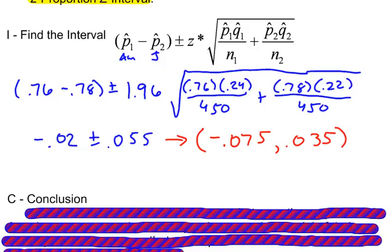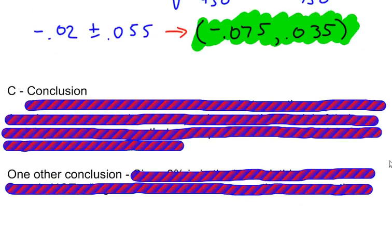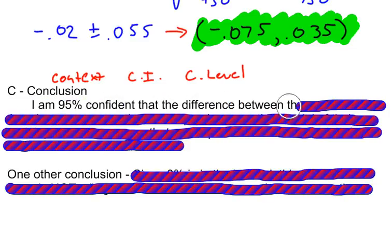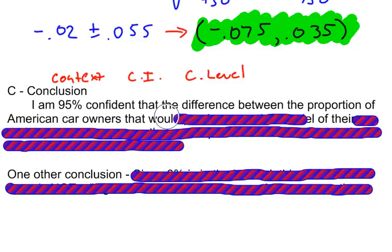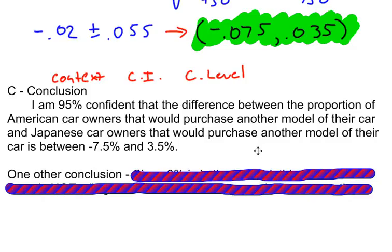This is my interval, and now I need to draw my conclusion. C stands for conclusion. Whenever you write your conclusion, you should always include three things: the context, the confidence interval, and the confidence level. Here's how it should read: I am 95% confident that the difference between the proportion of American car owners that would purchase another model of their car and Japanese car owners that would purchase another model of their car is between negative 7.5% and 3.5%.